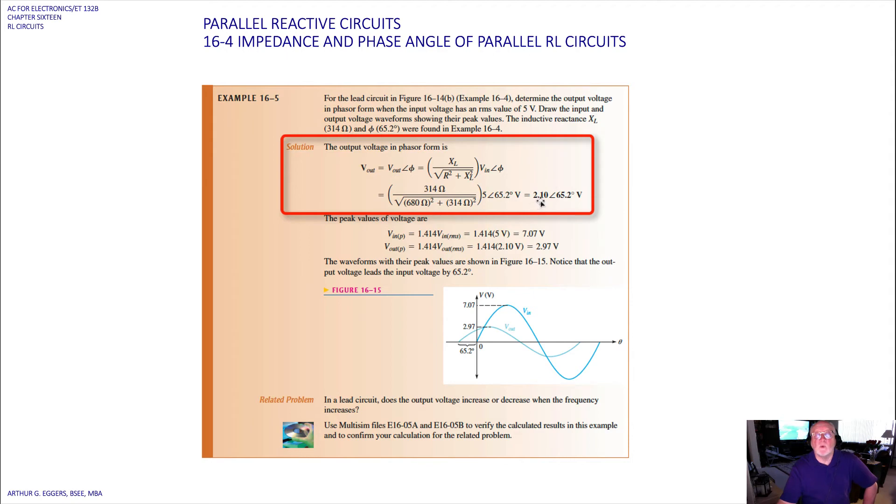The peak voltages of the voltage then are V_in peak and V_out peak. For RMS again you'll recall 1.414 for RMS volts in and 1.414 volts out. So 5 volts times 1.414 gives us 7.07 volts, and for the output 1.414 times 2.10, which we just calculated, we get 2.97 volts.